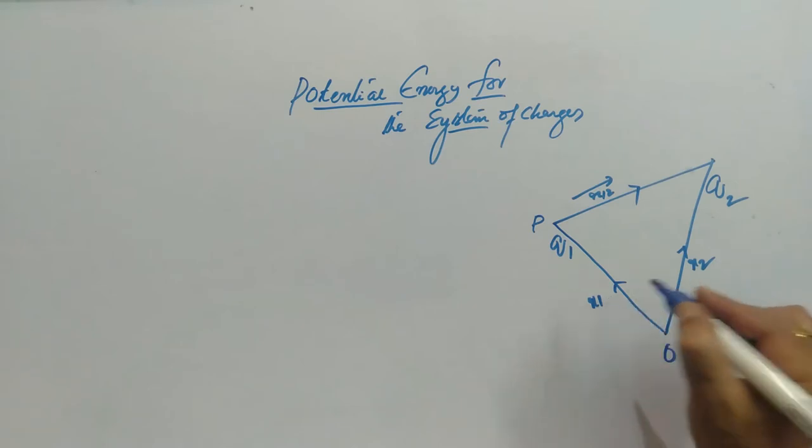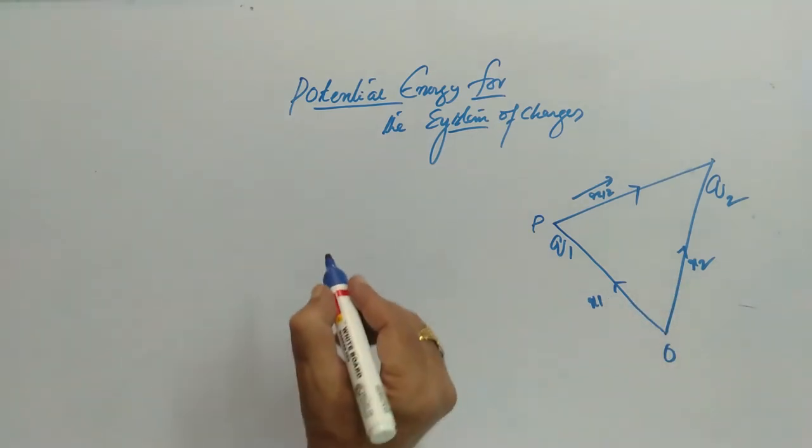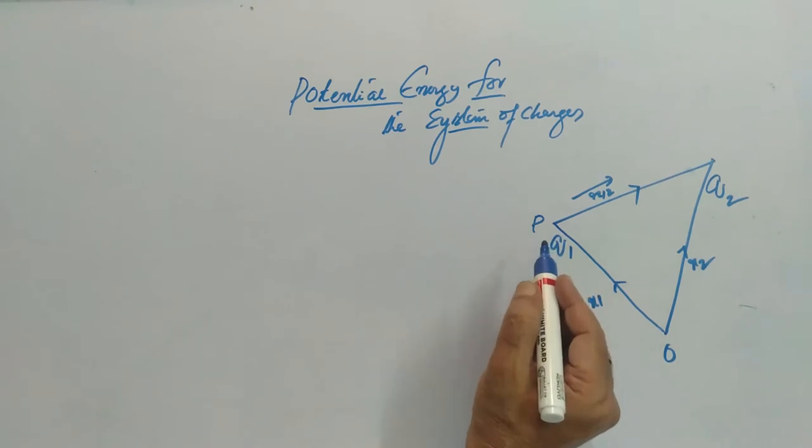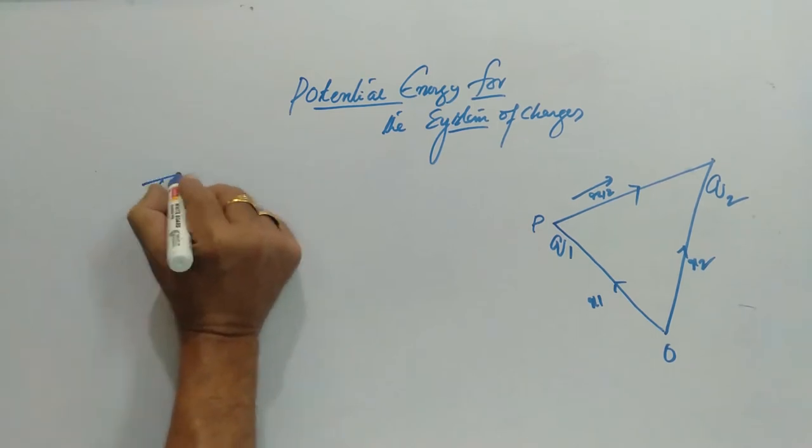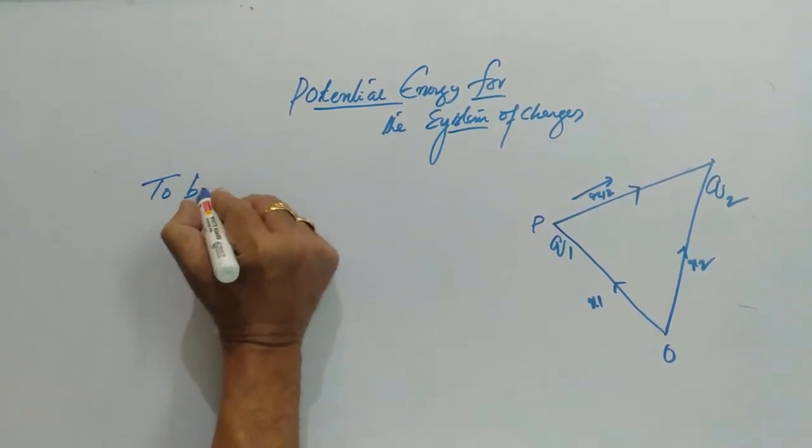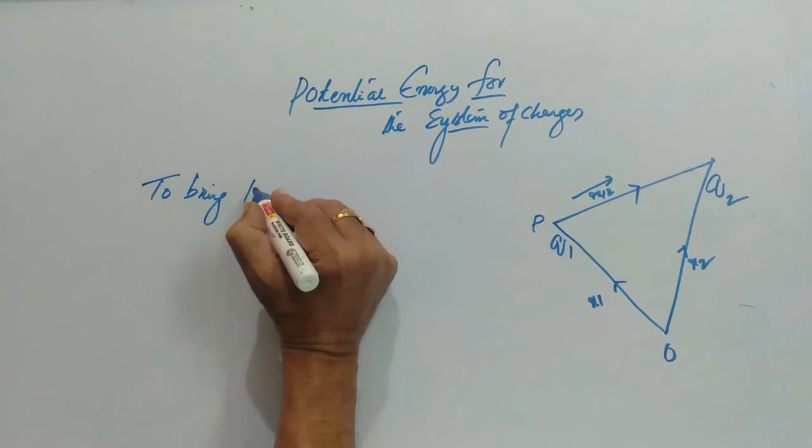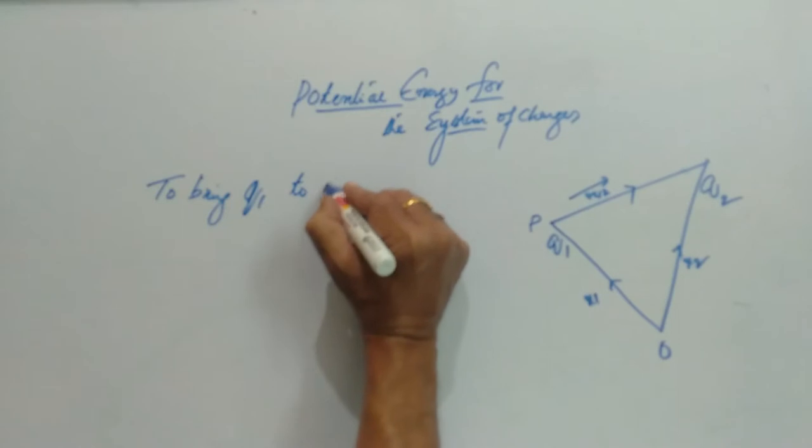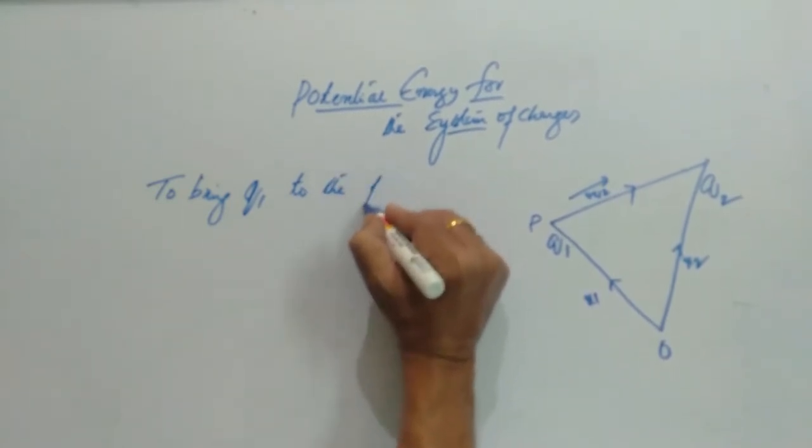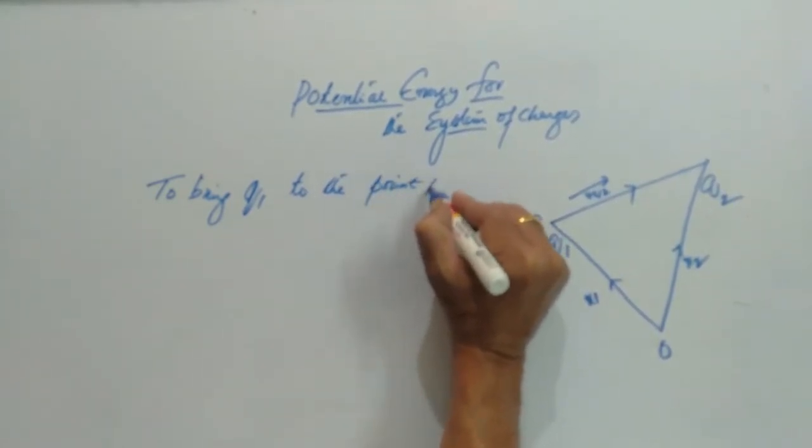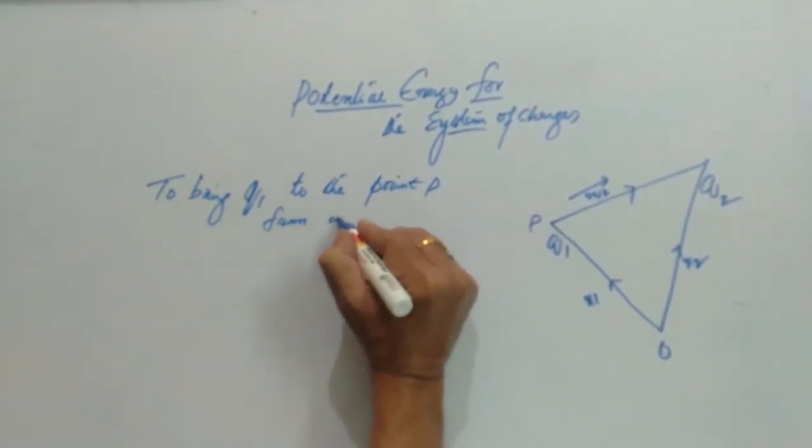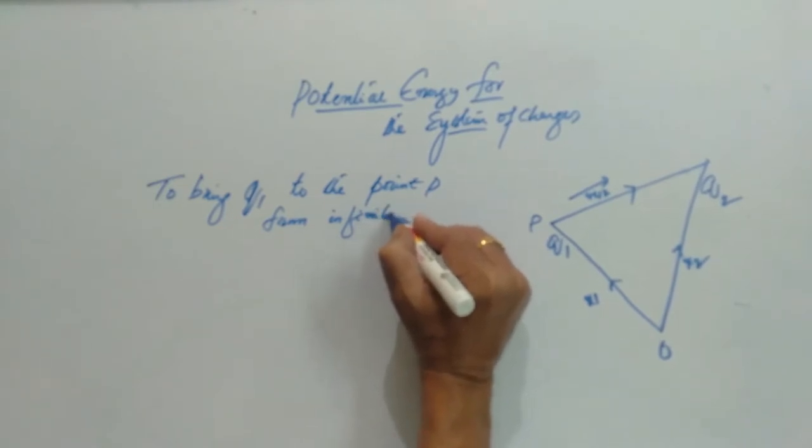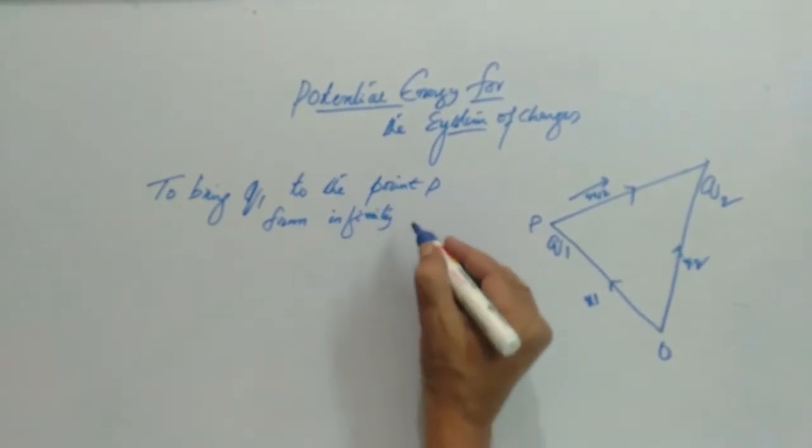So initially when we have to assemble this system, to bring Q1 to the point P from infinite distance or from infinity is zero.